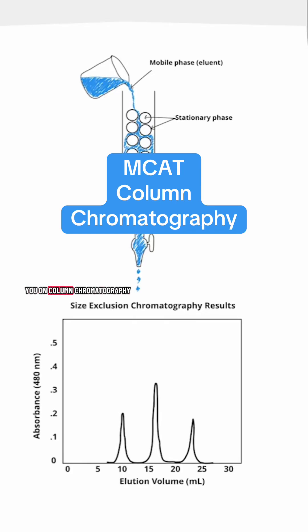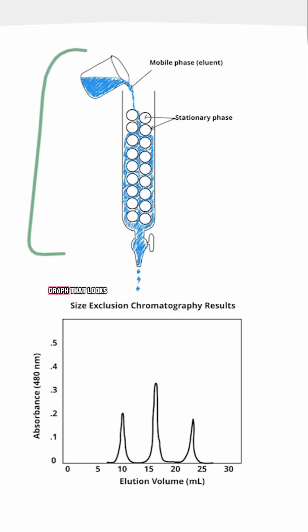This is exactly how the MCAT is going to test you on column chromatography. We are going to look at how this setup here can produce a graph that looks like this.